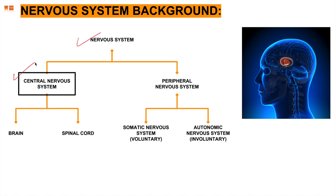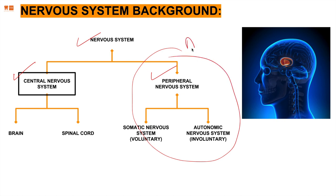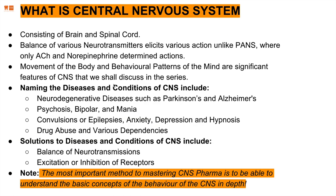The nervous system is divided into central and peripheral. For the Central Nervous System, we'll look at what the brain and spinal cord have to do with today's lecture. The CNS relies on a balance of various neurotransmitters to elicit various actions, unlike the peripheral autonomic nervous system, which functions only with acetylcholine and norepinephrine. In the CNS we have numerous neurotransmitters. CNS governs both movement of the body and behavioral patterns of the mind.